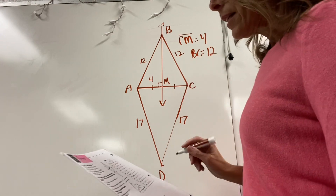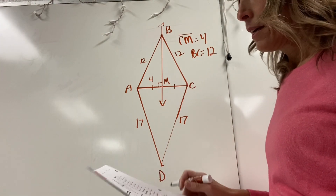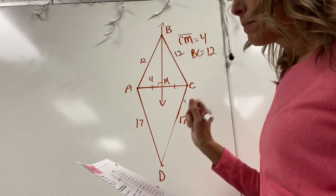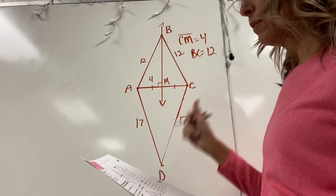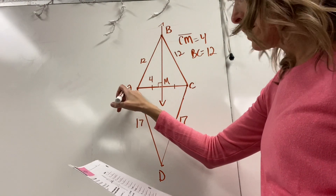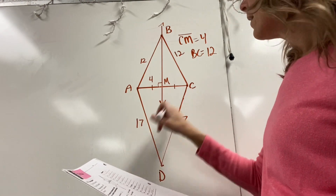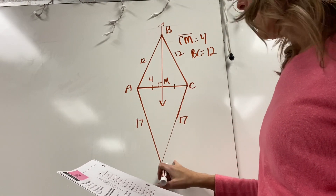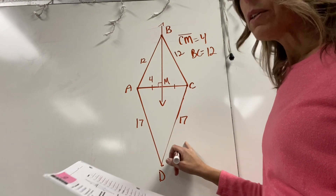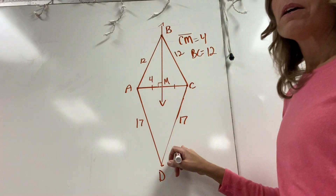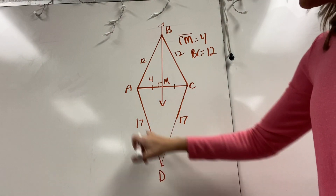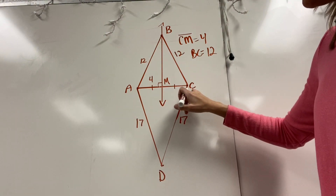Number three: line BM is the perpendicular bisector of AC. The rest of the problem says that AD equals CD, and they both equal 17. What can I conclude about point D? If point D is equidistant from the endpoints of this segment, it must lie on the perpendicular bisector of that segment.